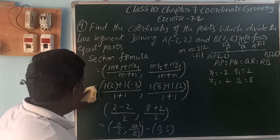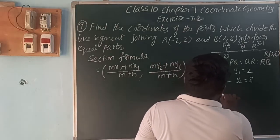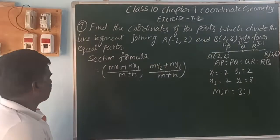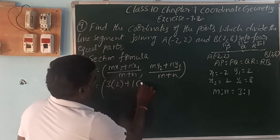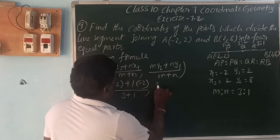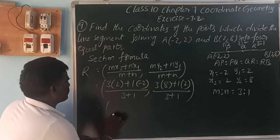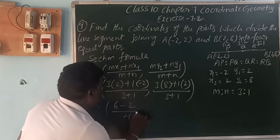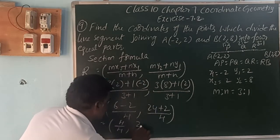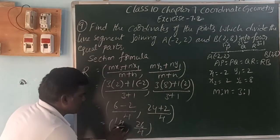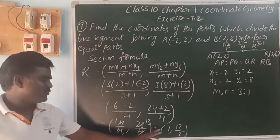At point R, the ratio is 3:1. So M is 3, N is 1. That is: (3×2 + 1×(-2)) / (3+1) = (6 - 2) / 4 = 4/4 = 1. And (3×8 + 1×2) / (3+1) = (24 + 2) / 4 = 26/4 = 13/2. So the point R is (1, 13/2).